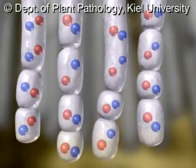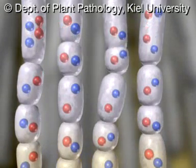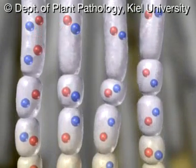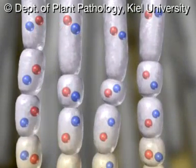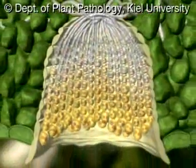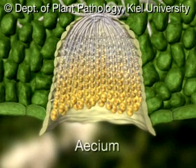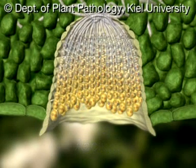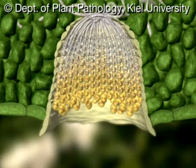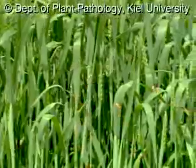The aeciospores develop in the form of chains. They are produced within an open cup-like organ, the aecium. After being released, the aeciospores are carried by the wind back to the other host, the cereal.